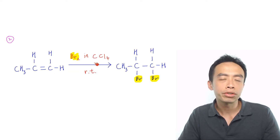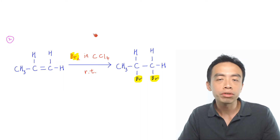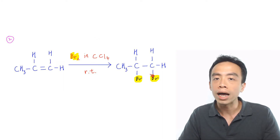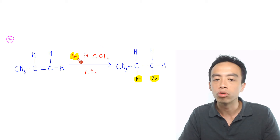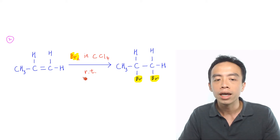The second must-know reaction of alkene is the electrophilic addition reaction to form our dibromoalkane. The reagents and conditions are bromine in CCl4 solvent at room temperature.